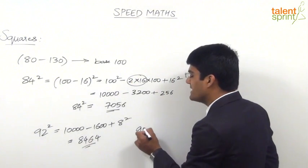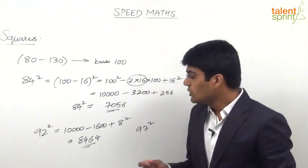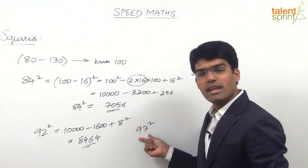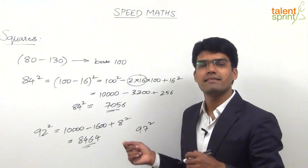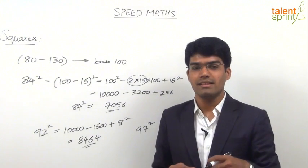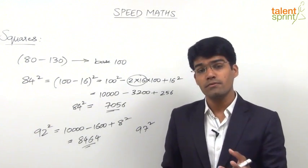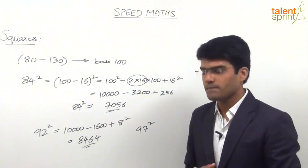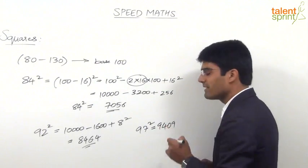Likewise, what is 97 squared? 97 is 100 minus 3. You need not even write these steps on paper — directly visualize them. So 10,000 minus 600 is 9,400. 9,400 plus 3 squared, which is 9, gives 9,409. So the answer is 9,409.